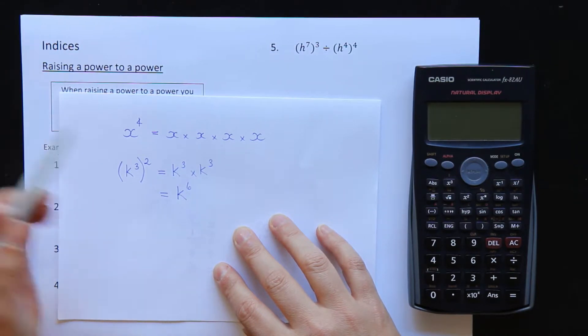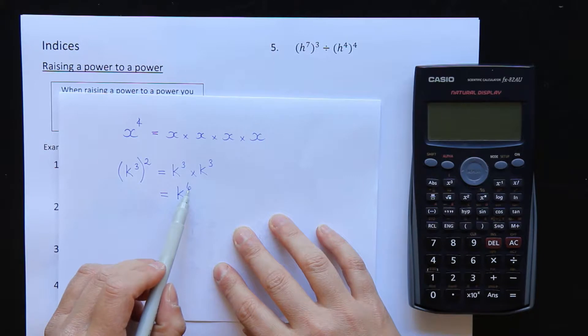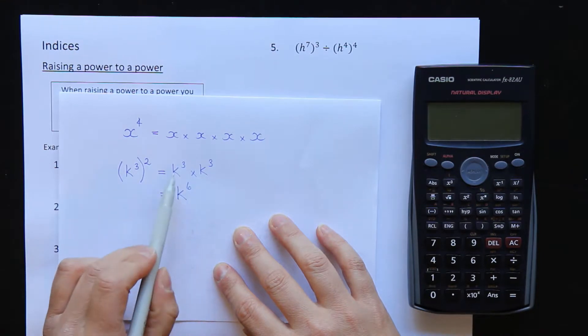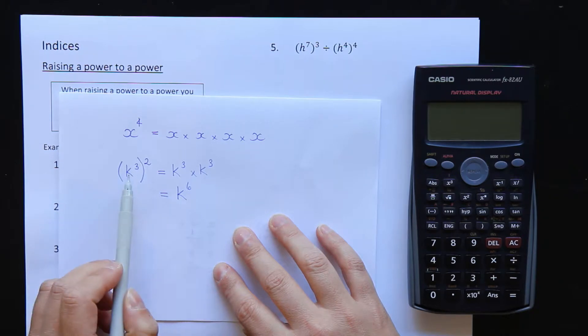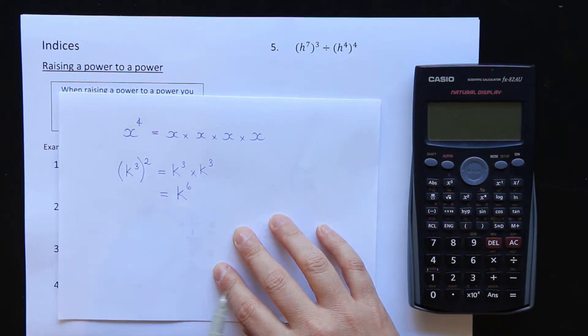The shortcut is this. We know our answer here has to be 6 from what I worked out here. The shortcut is if you look here, all I have to do is multiply the 2 times the 3 together and I will get 6 instead of having to expand them.